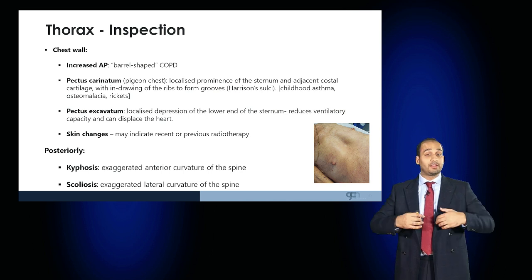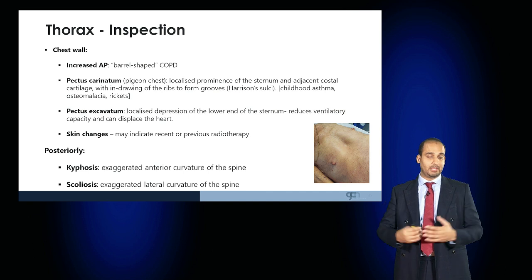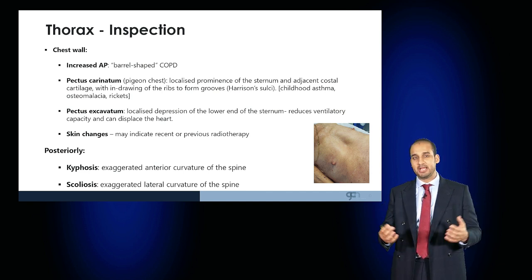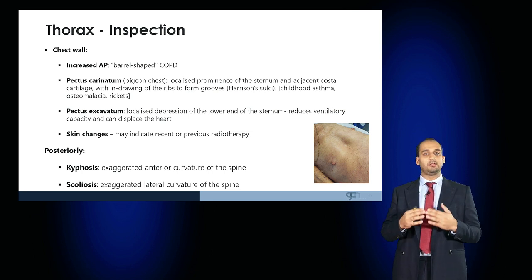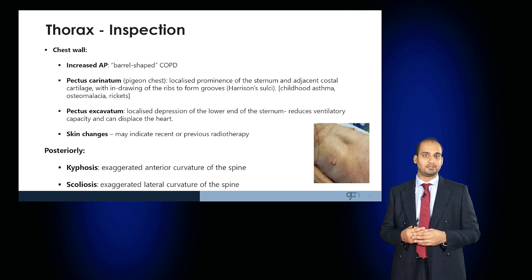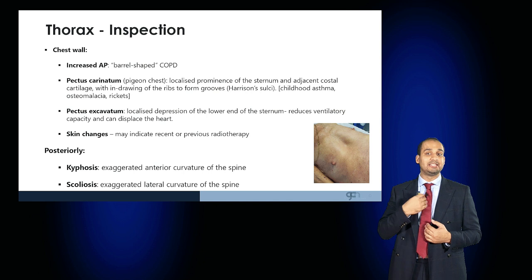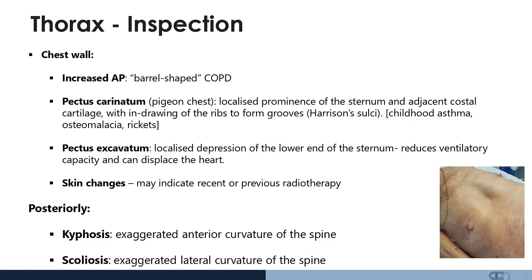Inspect whether the chest wall itself appears deformed. A barrel-shaped chest can be seen in COPD where there is chronic hyperinflation. Pectus carinatum, or pigeon chest, is where there is a localised prominence of the sternum and adjacent costal cartilage, with in-drawing of the ribs forming Harrison's sulci. Pectus excavatum is a localised depression of the lower end of the sternum, which would reduce ventilatory capacity and can also cause displacement of the heart. Posteriorly, inspect the thorax for any signs of kyphoscoliosis, which can also affect respiratory capacity.